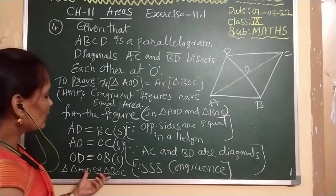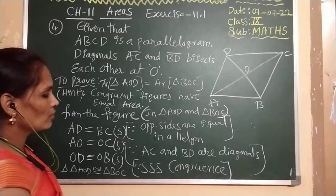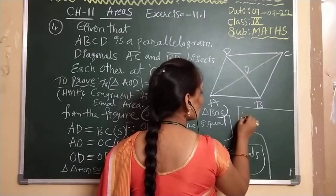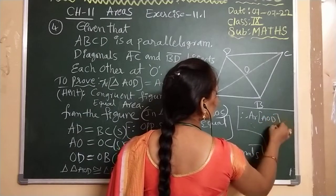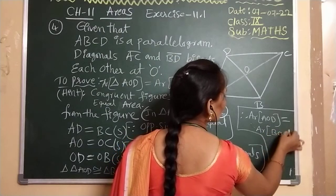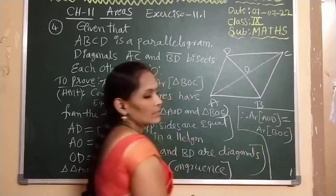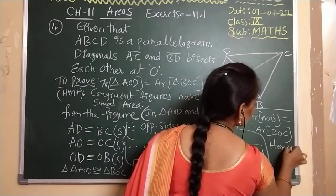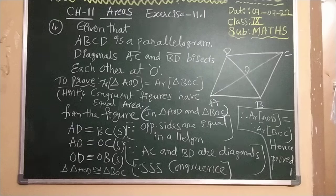So we can say that these two triangles are congruent triangles. Whenever congruent figures are there, they should have equal area. Therefore, area of triangle AOD is equal to area of triangle BOC. These two triangles have equal area. Hence, proved.